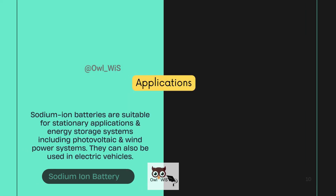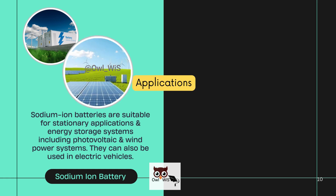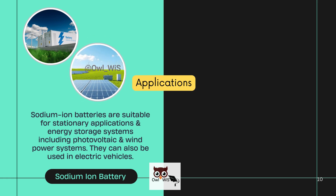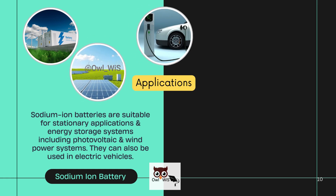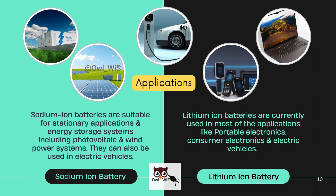Sodium ion batteries are suitable for stationary applications and energy storage systems, including photovoltaic and wind power systems. They can also be used in electric vehicles. Lithium ion batteries are currently used in most applications like portable electronics, consumer electronics, and electric vehicles.